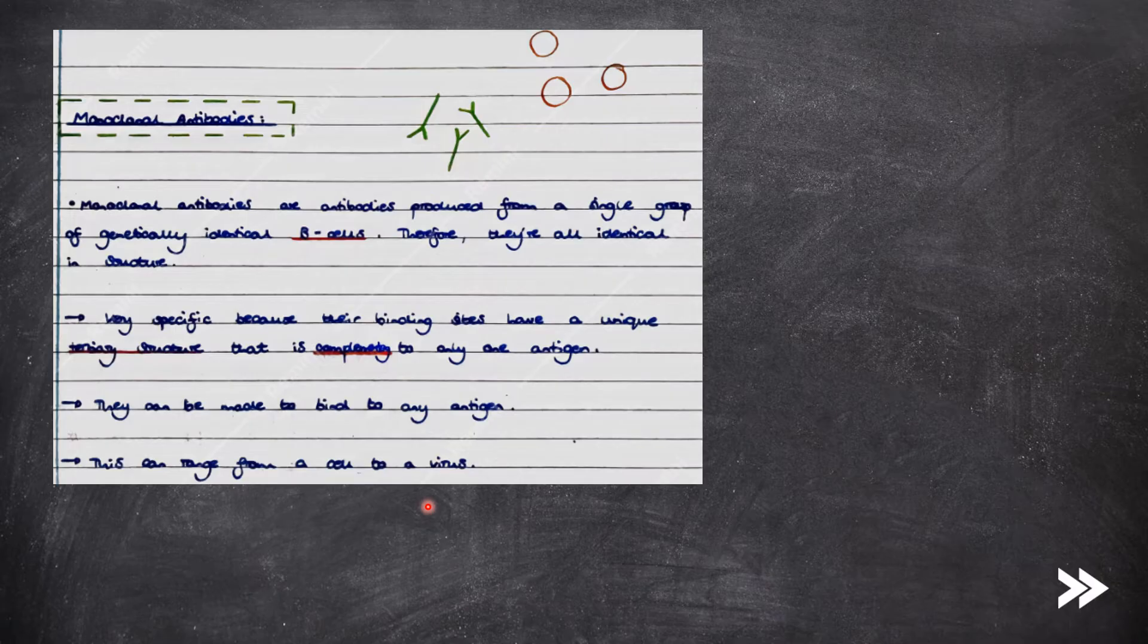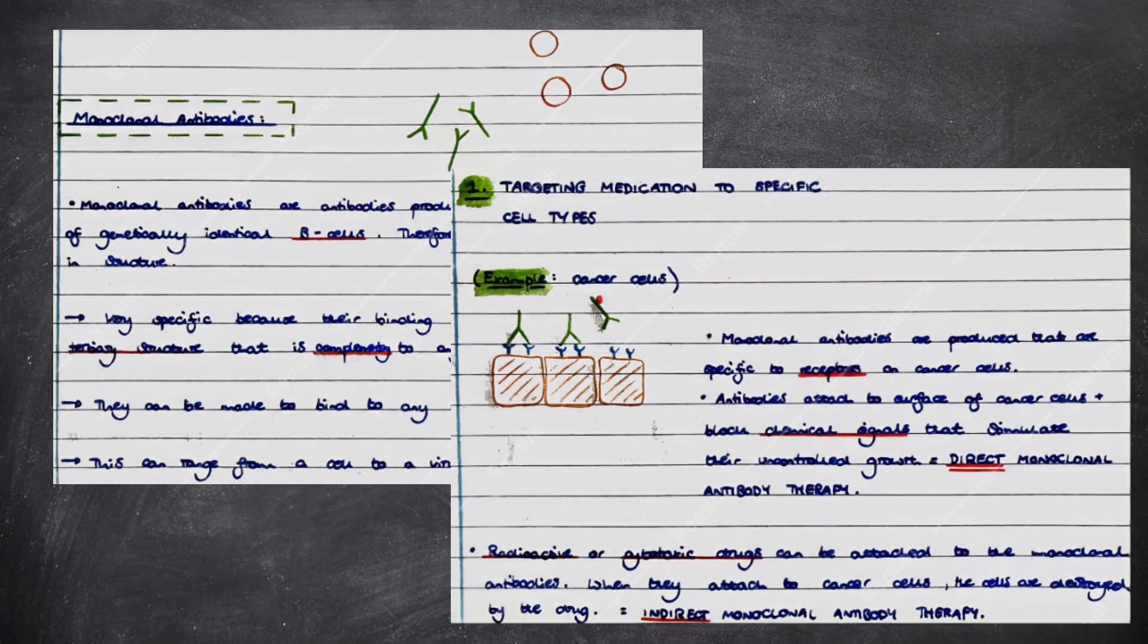Therefore, they're all identical in structure. They are highly specific because their antigen binding sites have a unique tertiary structure that is complementary to only one antigen. They can be made to bind to any antigen, and this can range from a cell to a virus.